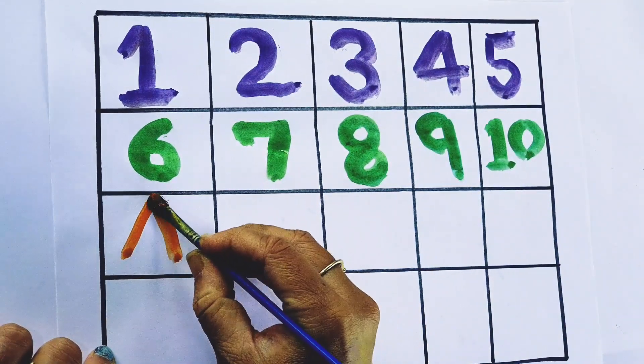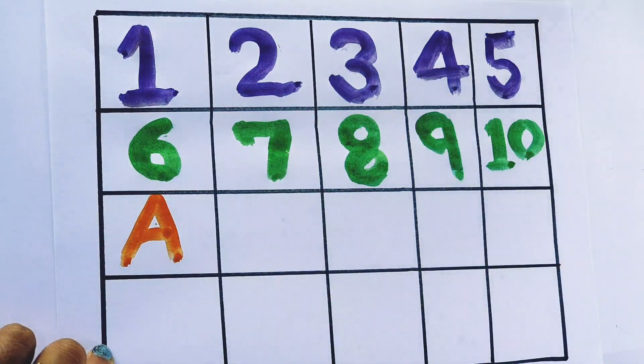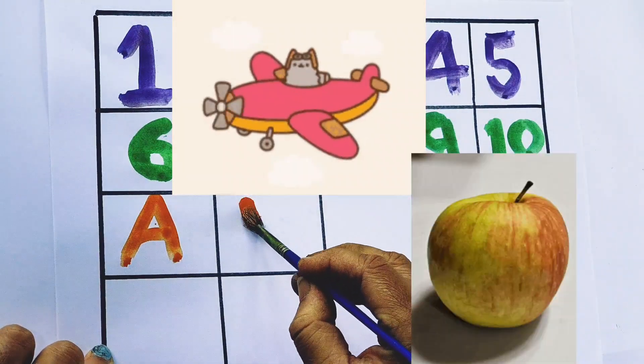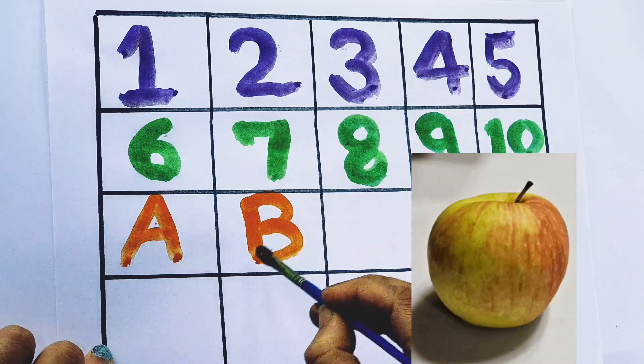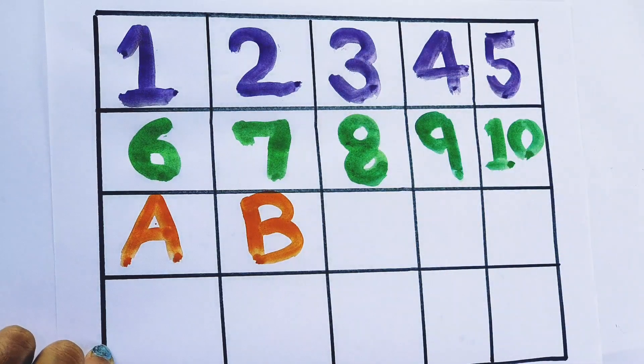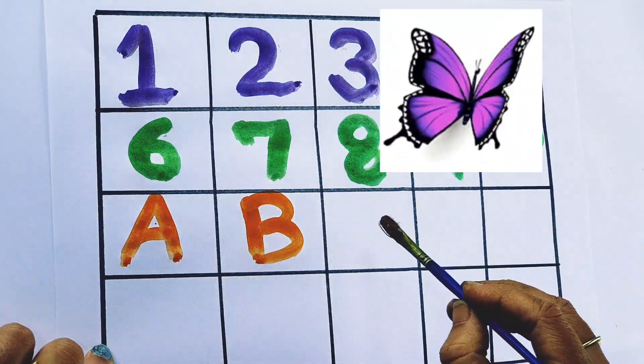A, A for airplane. A for apple. B, B for butterfly. B for bat.